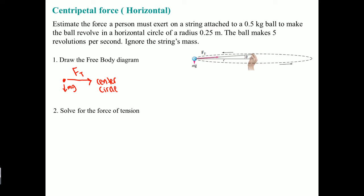It asks us to solve for the force of tension. What arises here is understanding what is actually causing the force to revolve around the circle. Is gravity contributing to the centripetal force? No, it's not — gravity only acts in the vertical direction. The only force acting in the horizontal direction is the tension force. So you can write: the centripetal force FC equals the force of tension. There's no minus mg here.